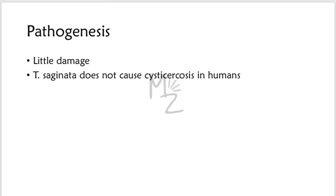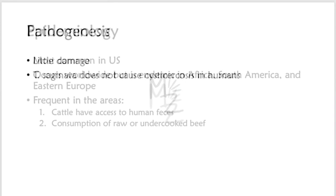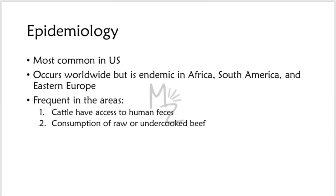Pathogenesis: little damage results from the presence of the adult worm in the small intestine. Unlike Taenia solium, Taenia saginata does not cause cysticercosis. Epidemiology: this infection is most common in the US and occurs worldwide but is endemic in Africa, South America, and Eastern Europe. It is frequent in areas where cattle have access to human feces and consumption of raw or undercooked beef is common.